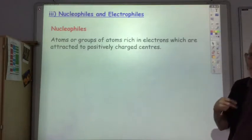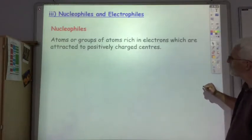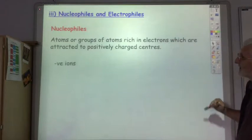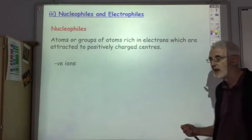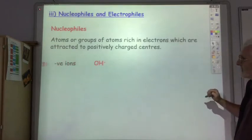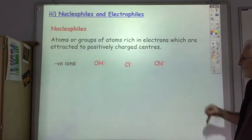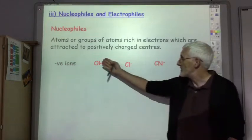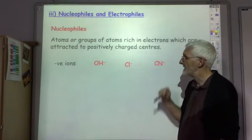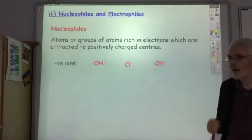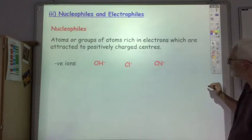So the sorts of things that you'll find you come across as being nucleophiles are negatively charged ions. They're going to be attracted to positive centers, so things like hydroxide ions, chloride ions and this is cyanide ion. We'll use them quite a lot in this section, all nucleophiles.